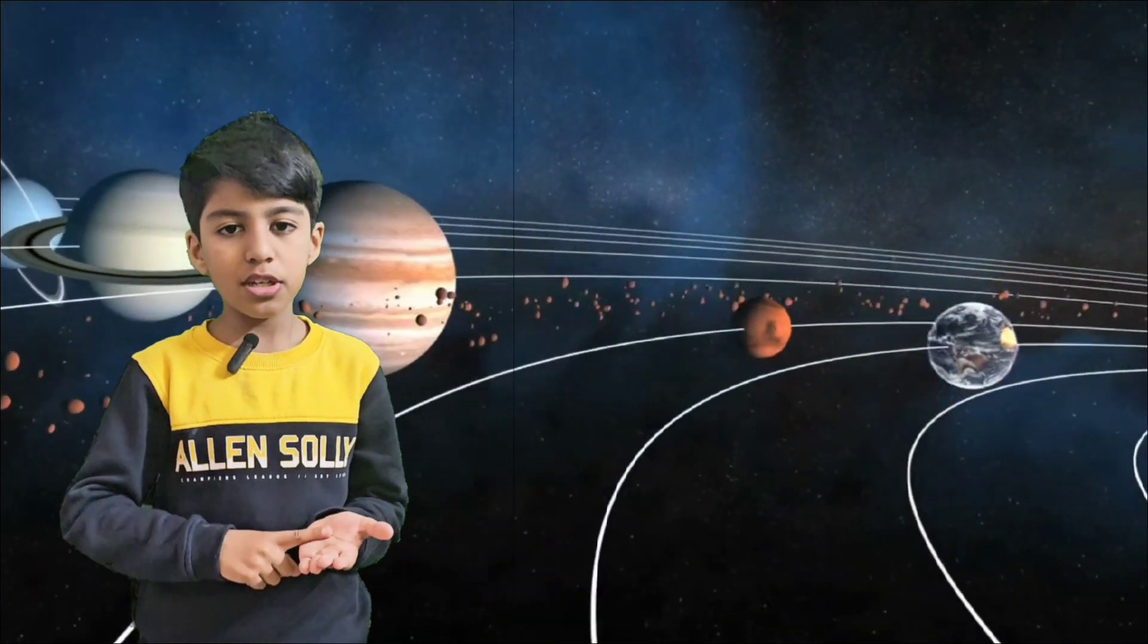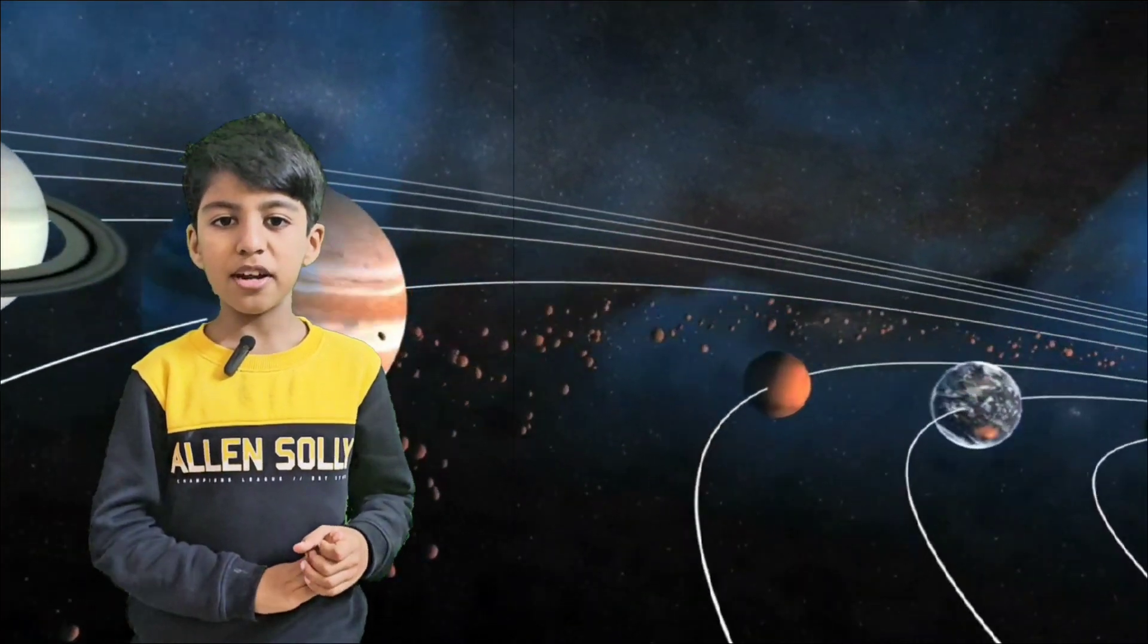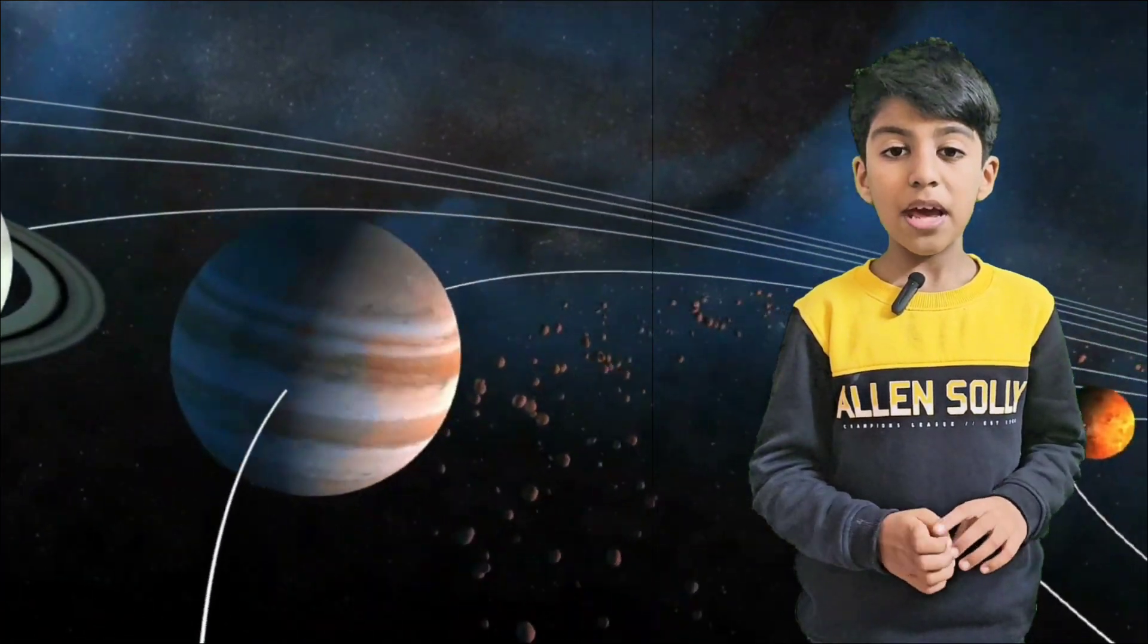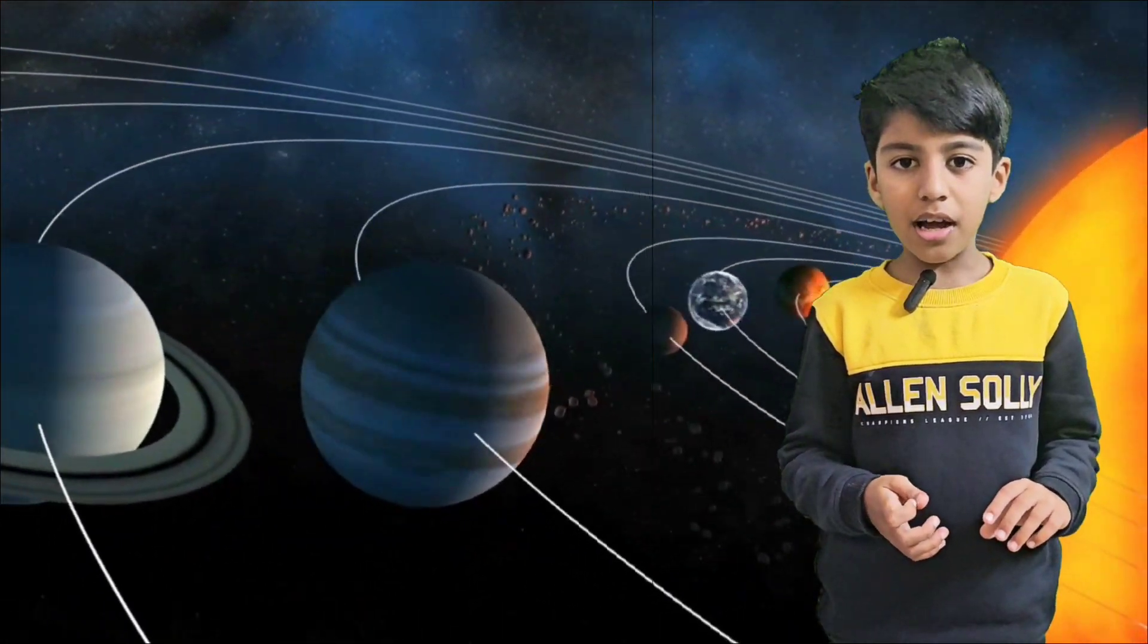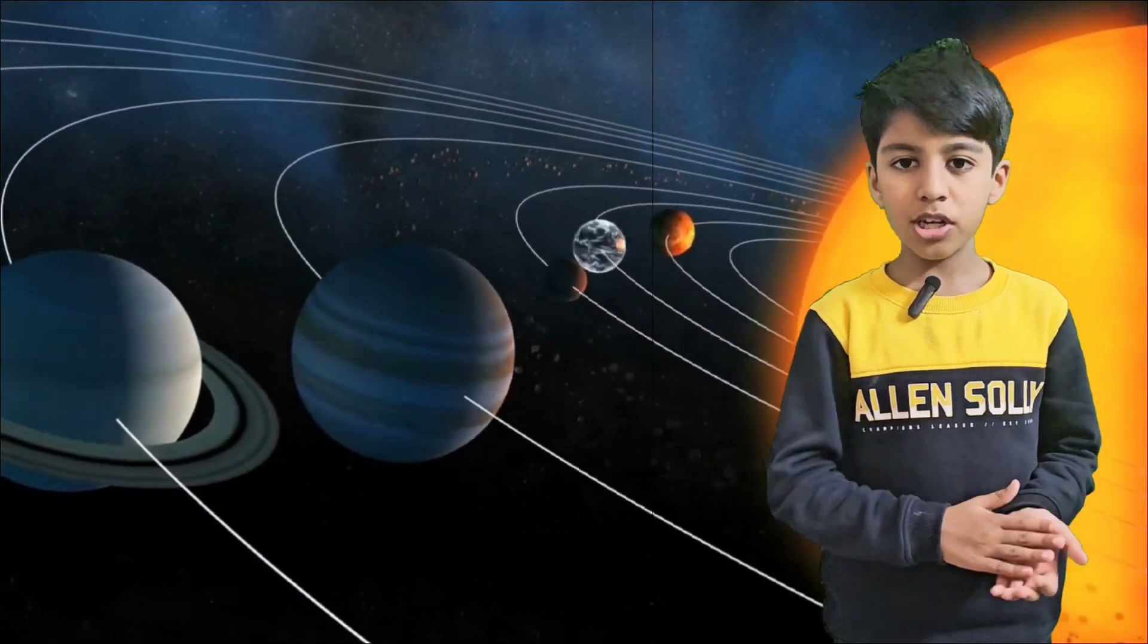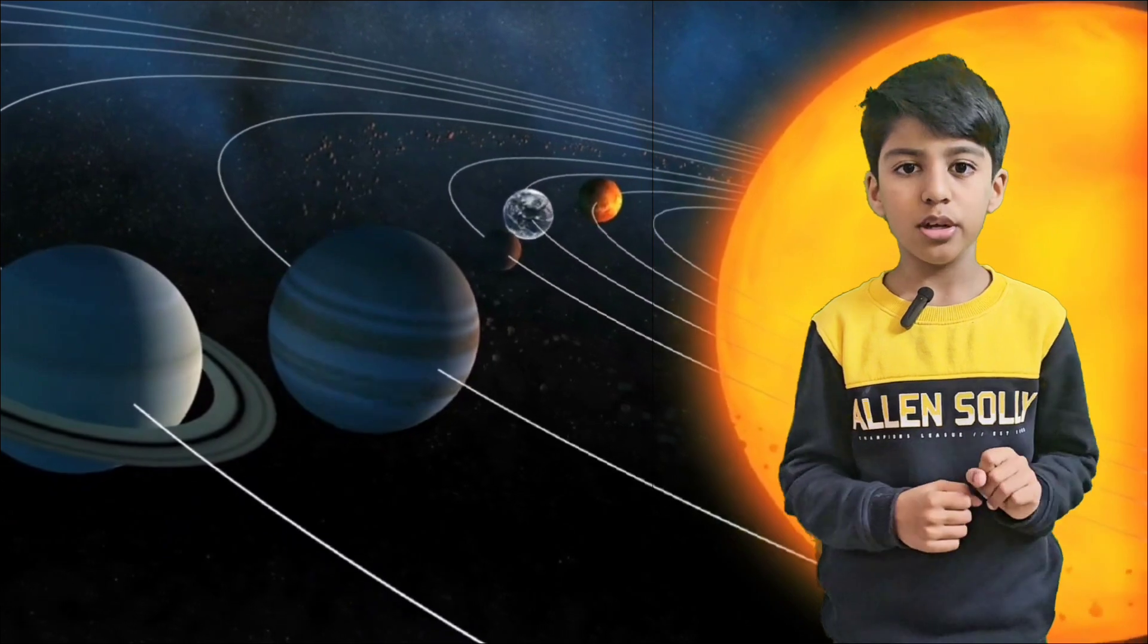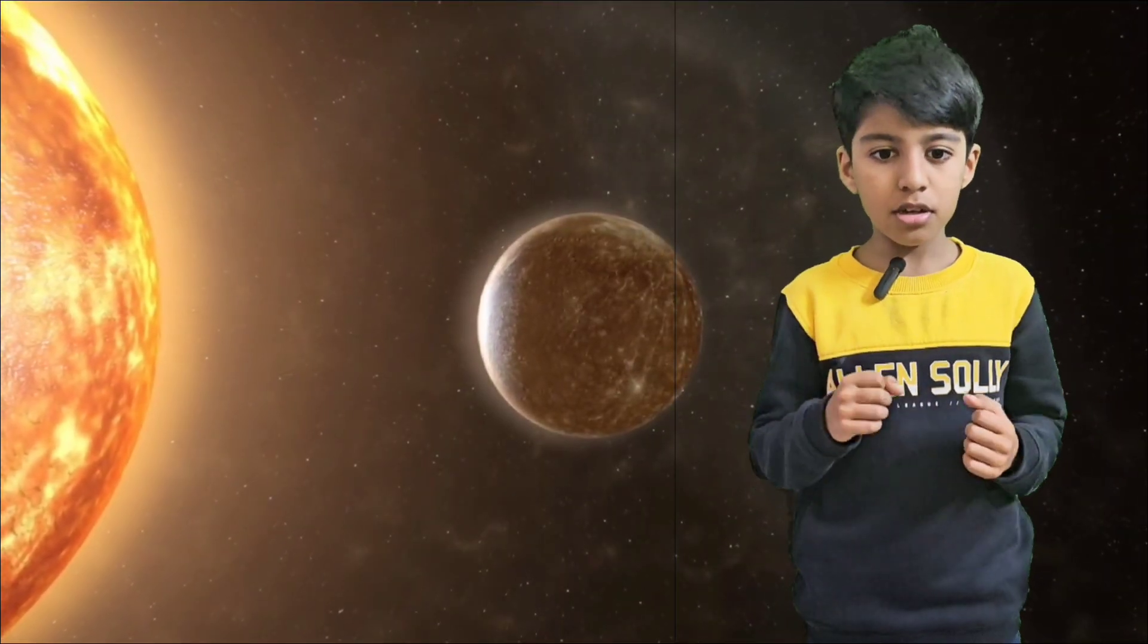Mercury, Venus, Earth, and Mars are terrestrial planets, whereas the planets which are outside the asteroid belt are Jupiter, Saturn, Uranus, and Neptune. They are called the gas giants.